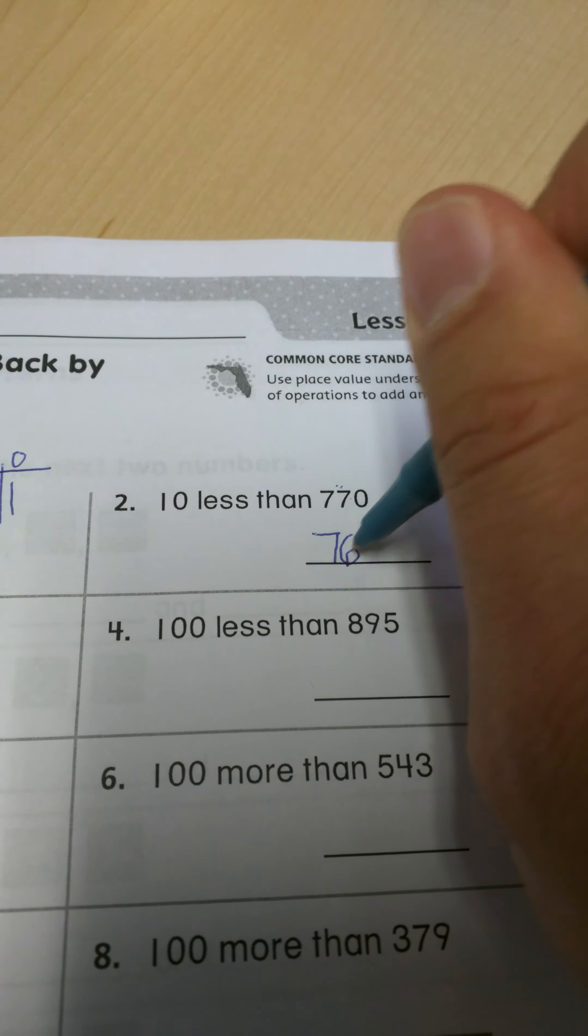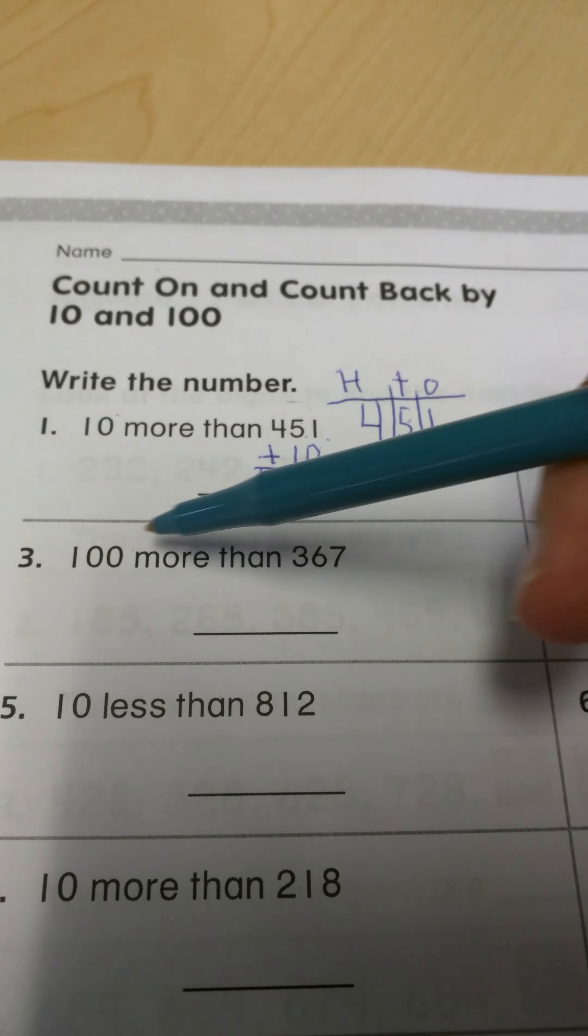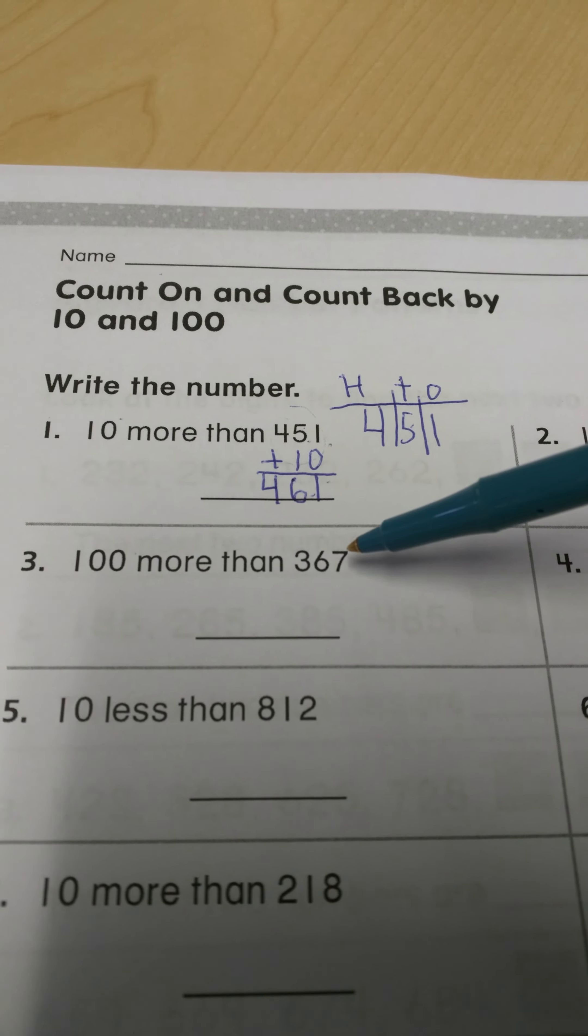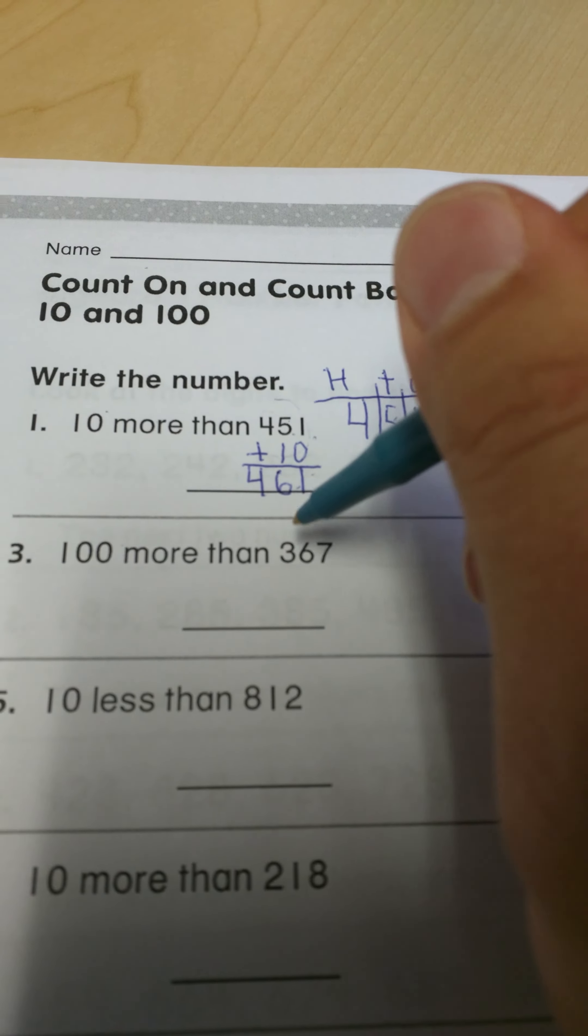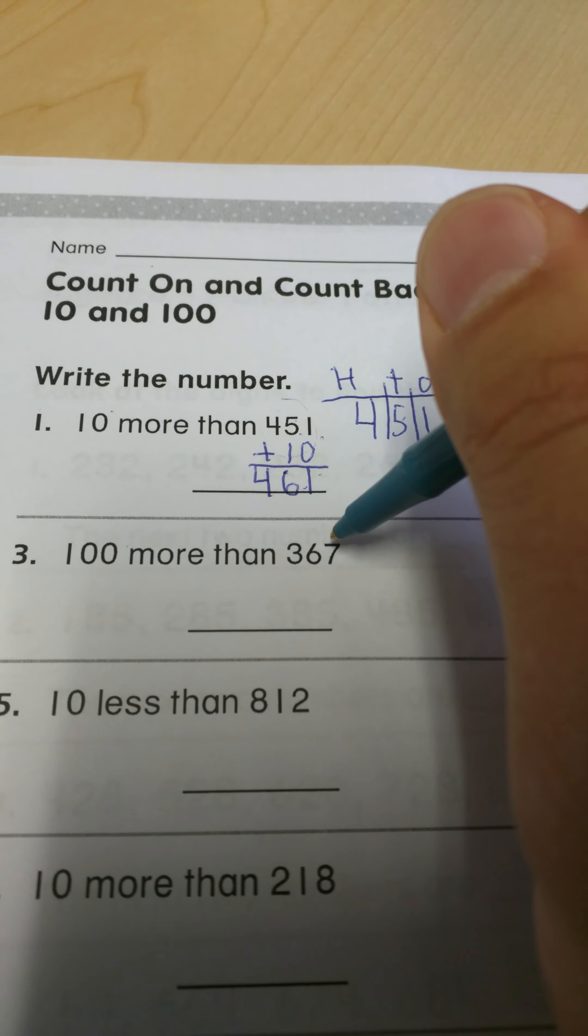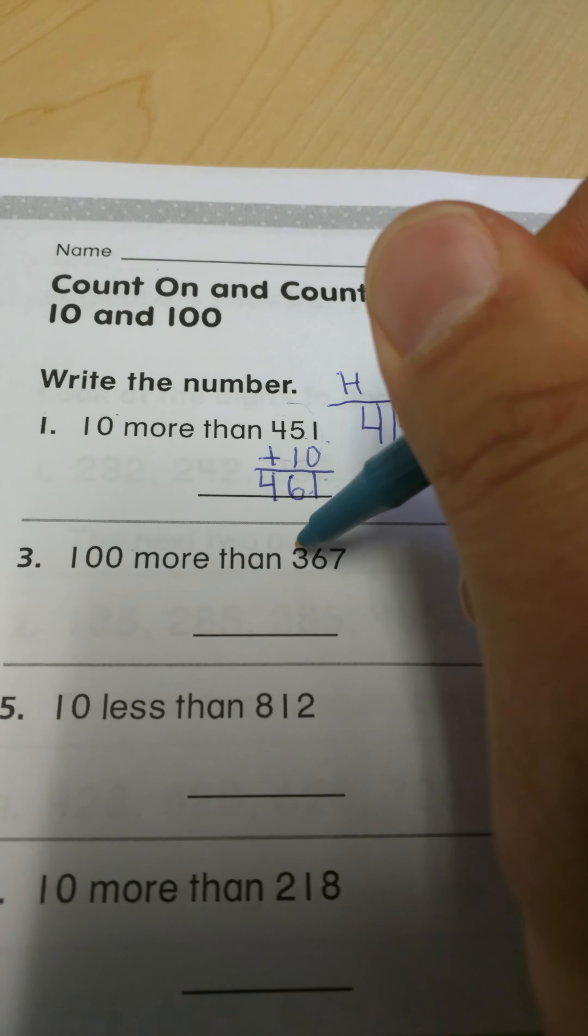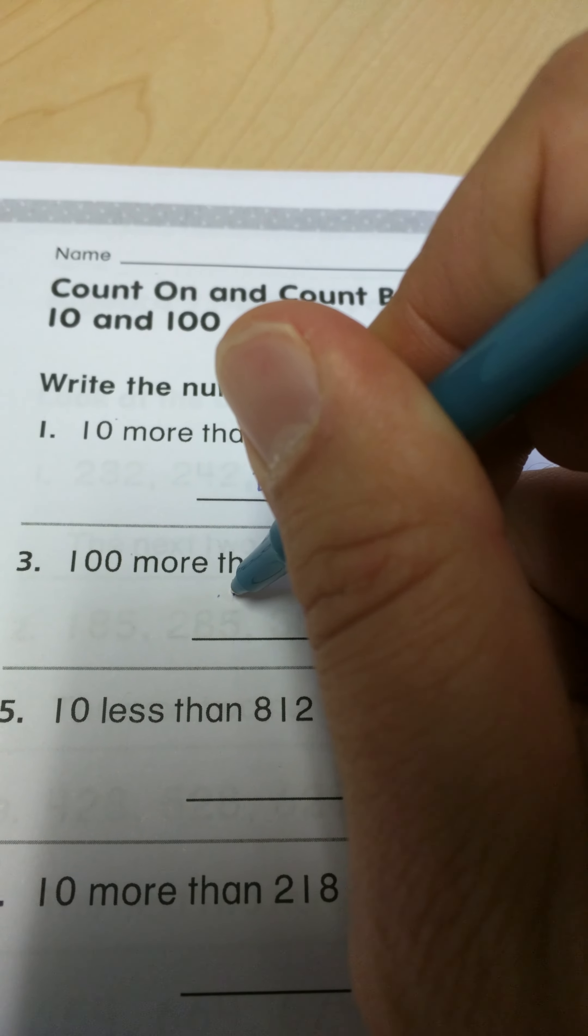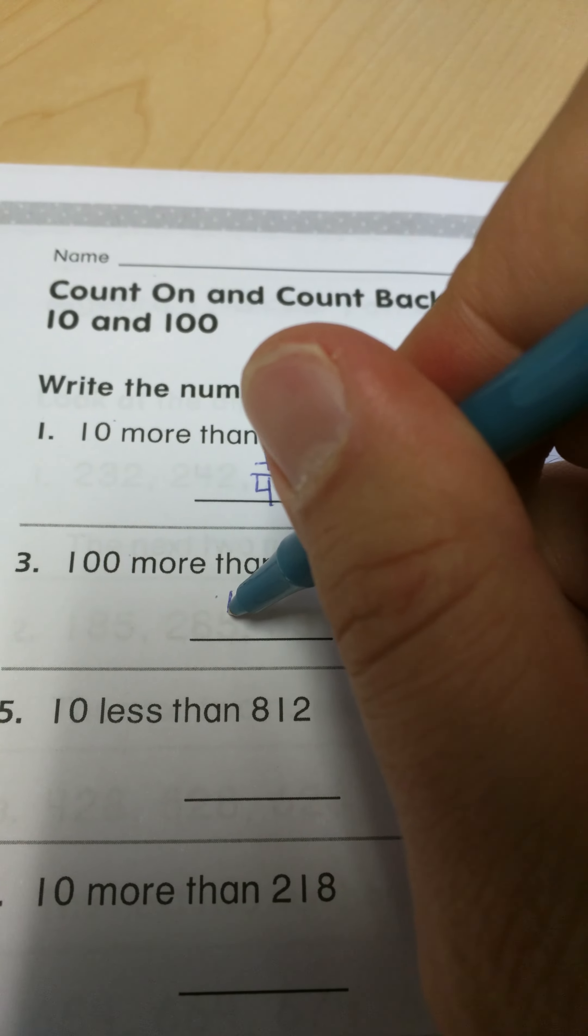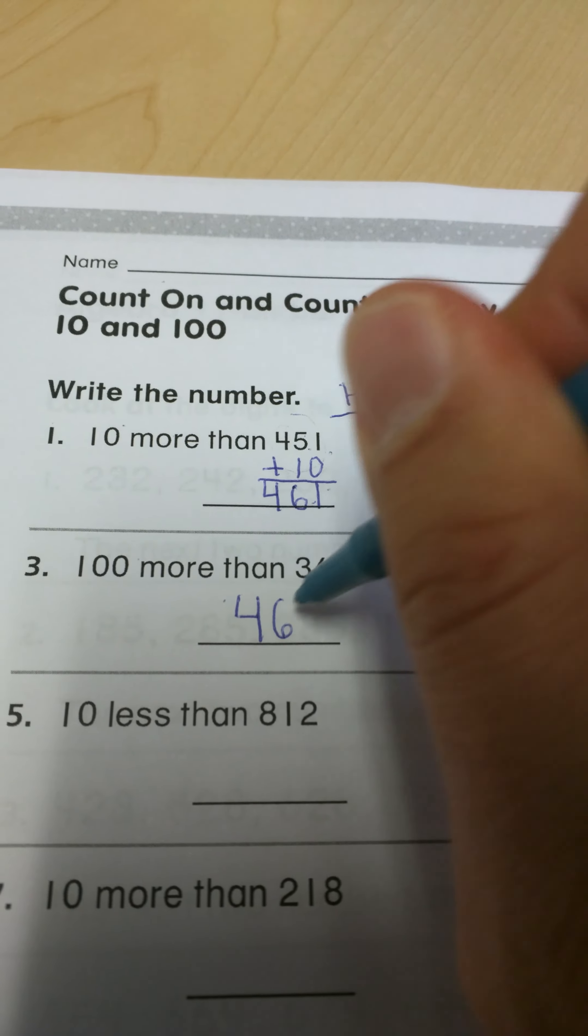If we look at the ones that work with the hundreds, it says 100 more than 367. I'm going to look at my place value and I see the hundreds are all the way over to the left. Now it's going to be 100 more and that's really what you have to pay attention to—it says more or less. So if it says 100 more than 367, it's going to be 467.